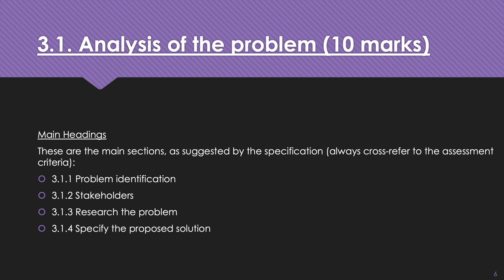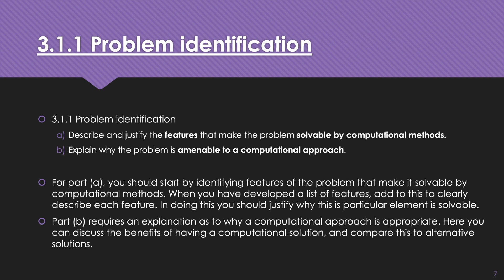Today we're only looking at the first two: problem identification and stakeholders. I don't really expect to see the numbers next to them — 3.1.1 and so on — as that wouldn't lend anything to your document. So looking at the first part, which is 3.1.1, problem identification.